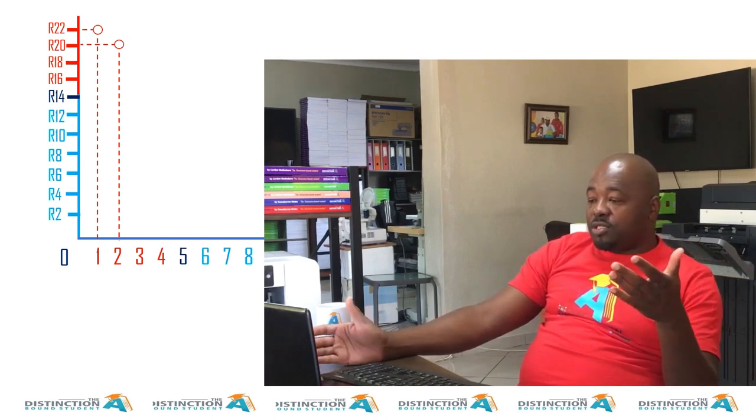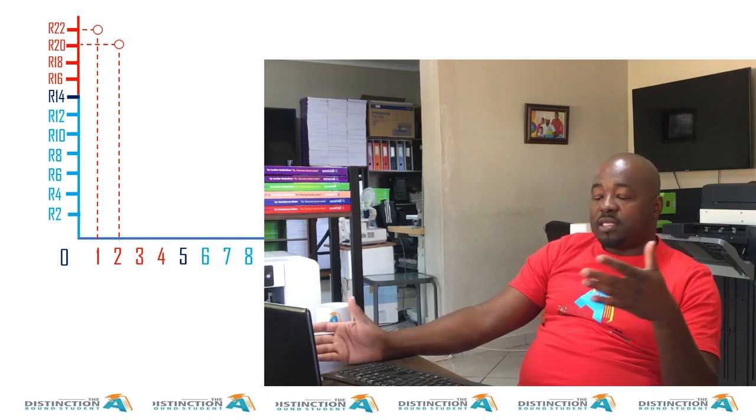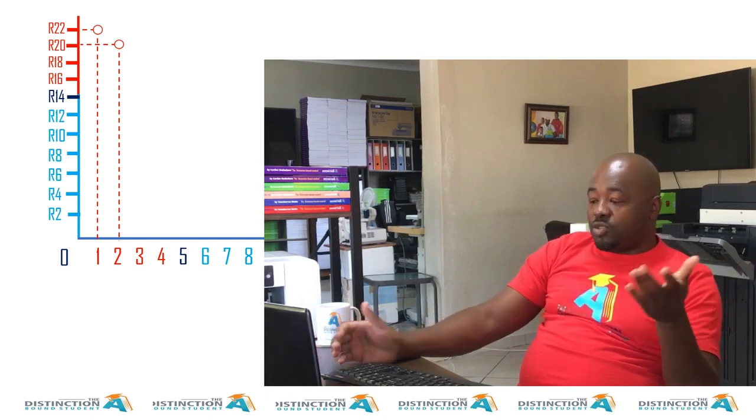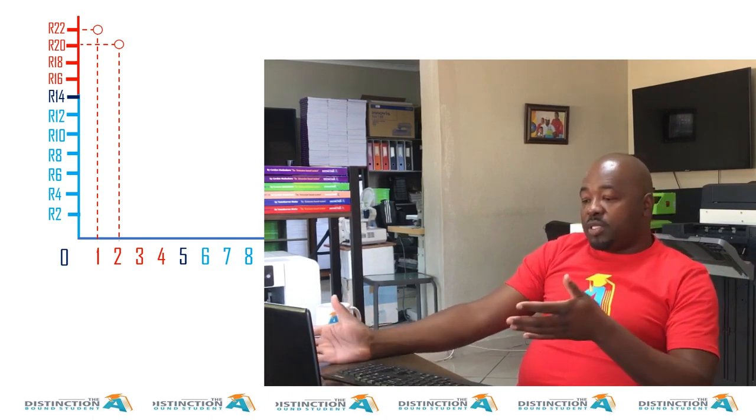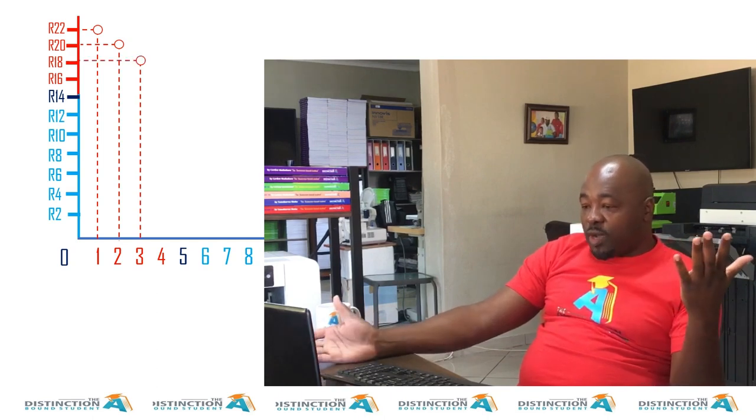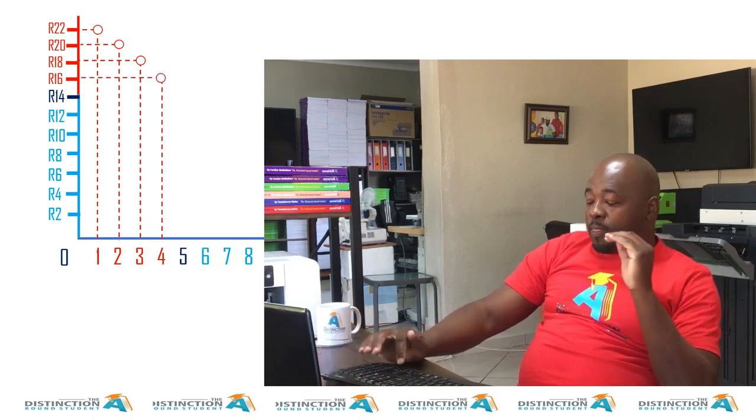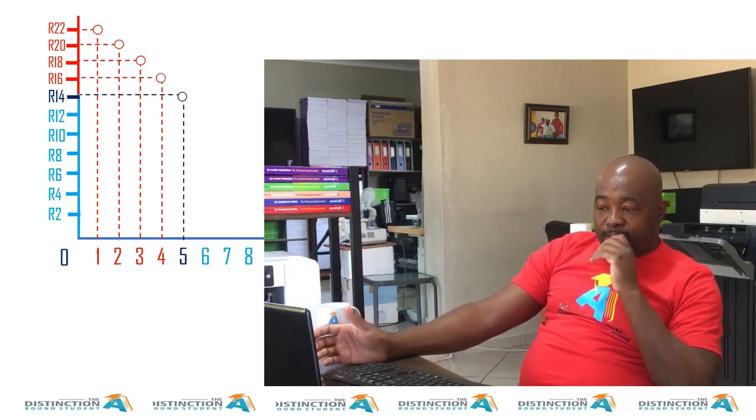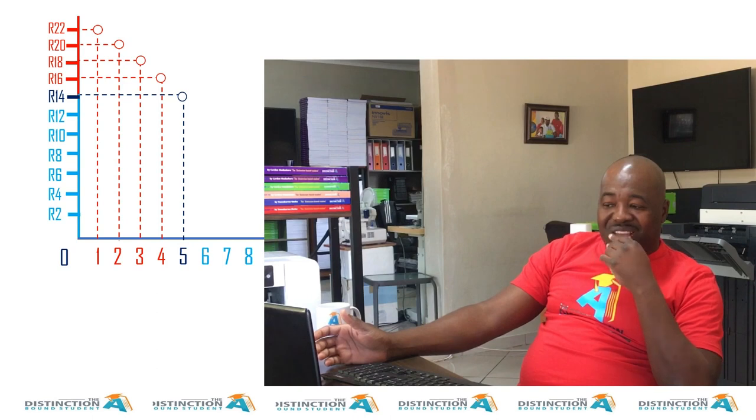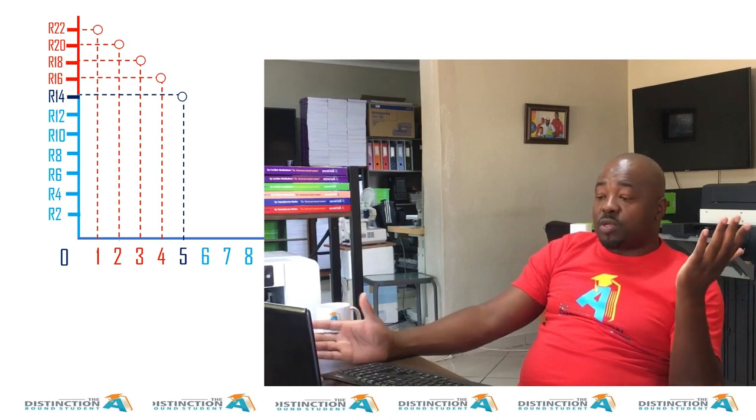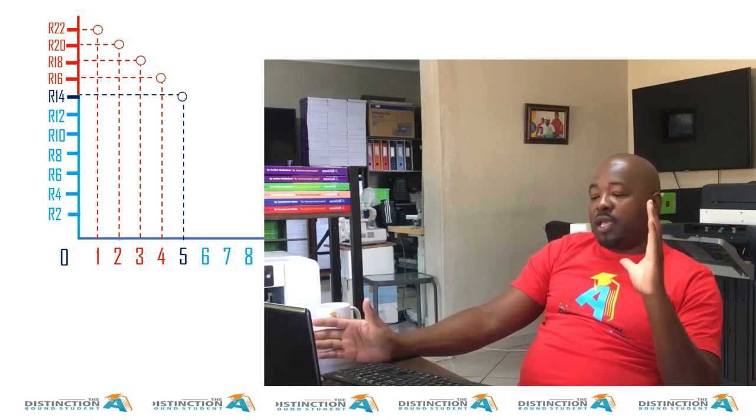According to the law of demand, as output increases, price decreases. So you'll see that at the second quantity, they can sell at 20 rands. And as output increases, the third quantity, they sell it for 18 rands as you see there. So up to this point, I think you can see something.